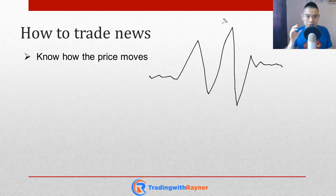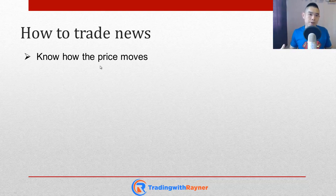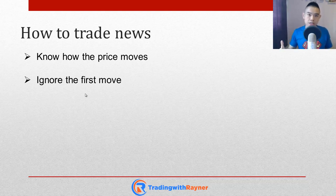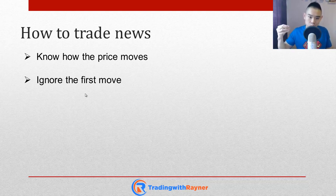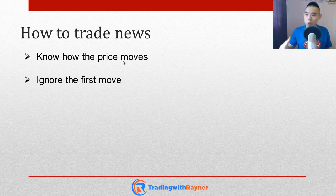Bear this in mind because you will see this a few times later on. So number one is know how the price moves. Number two: ignore the first move. Whenever the news just comes out, there's usually a first move the market is going to make — whether it's going to break out higher or lower — ignore the first move. Two reasons: number one, the spread is usually pretty wide during this period, so you are down immediately 20–30 pips the moment you hit buy or sell. And second, as you've seen, if you know how price moves, the first move is usually the fake move. Don't get suckered in by the huge momentum candles.